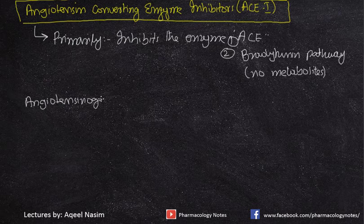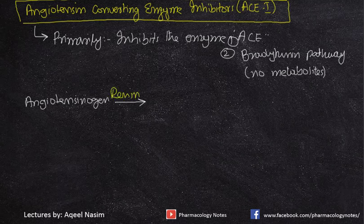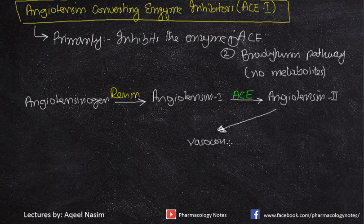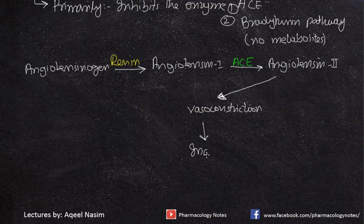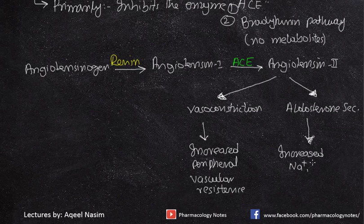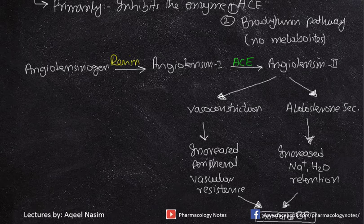The first mechanism: angiotensinogen is converted into angiotensin 1, which with the catalyzing enzyme ACE is converted into angiotensin 2. Angiotensin 2 is responsible for vasoconstriction — this causes increased peripheral vascular resistance, which increases blood pressure. On the other hand, it causes aldosterone secretion, leading to increased sodium and water retention inside the body. These two effects ultimately lead to increased blood pressure.